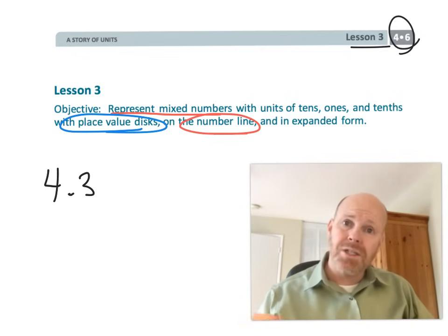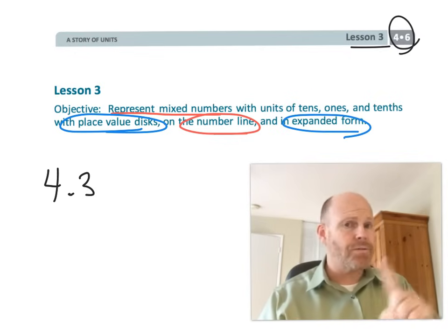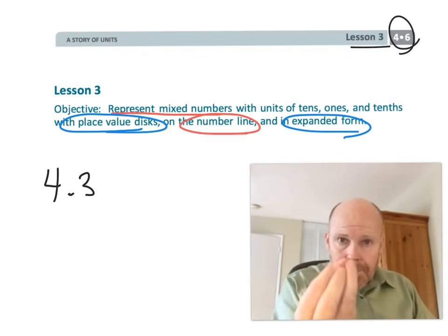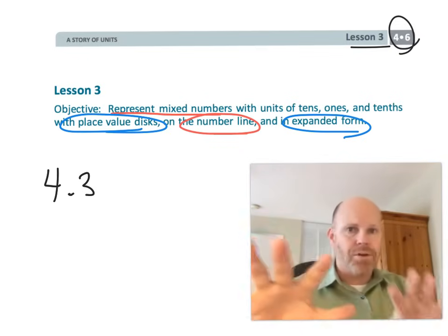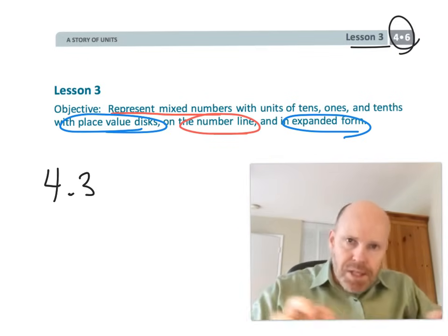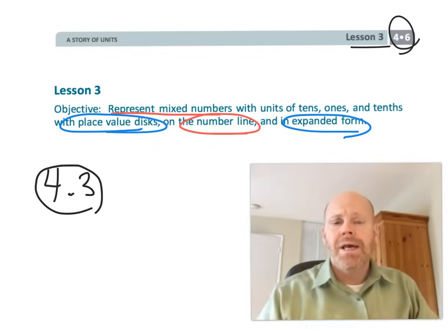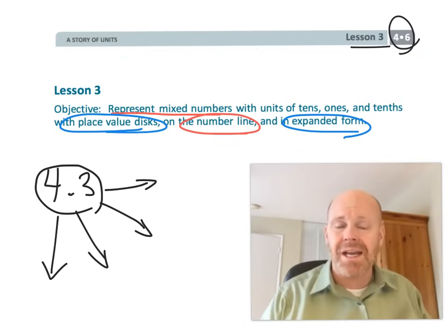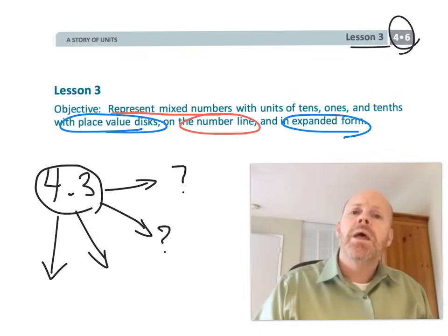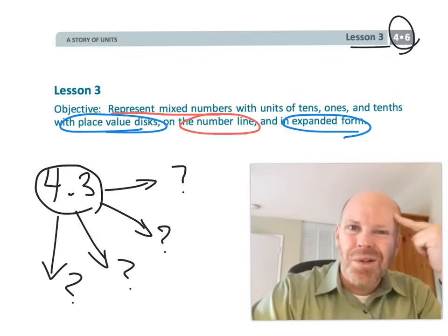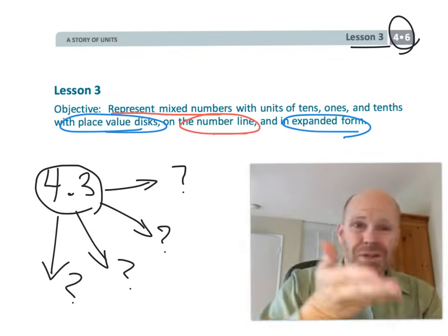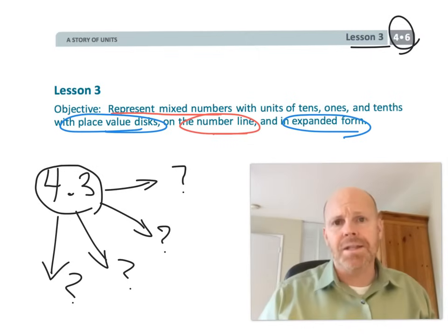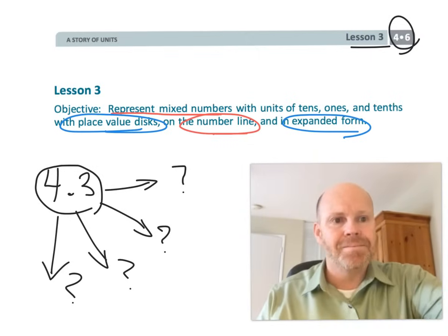Students will think about a decimal like 4.3 in expanded notation using both decimals and fractions, and in words. The idea is to let students experience a number in a variety of ways so they can compare and contrast all these representations and develop a deep understanding of what decimals mean, rather than thinking a decimal is just a whole number with a dot somewhere.